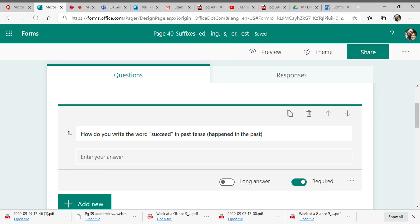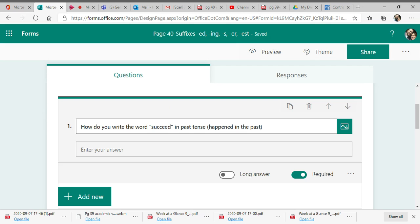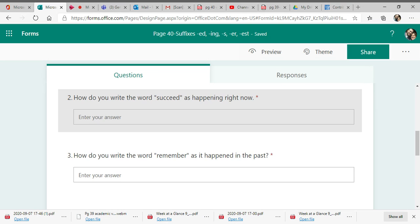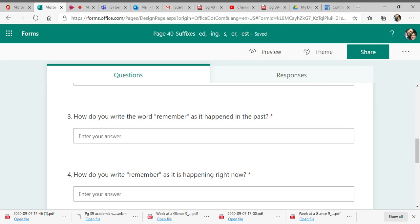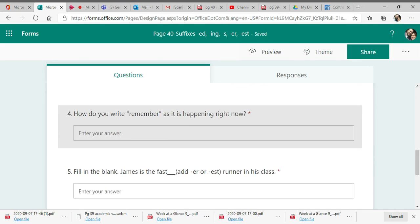All right, if it happened in the past, remember to add ed. So that one would be succeeded, right? How do you write the word succeed as happening right now? How do you write the word remember as it happened in the past? How do you write remember as it's happening right now?